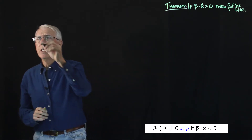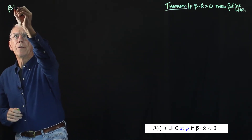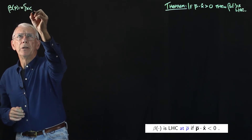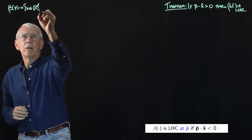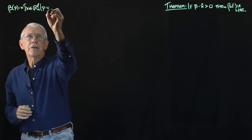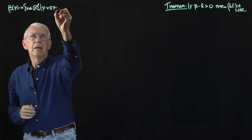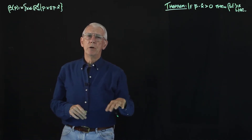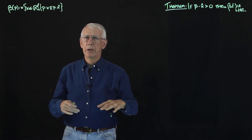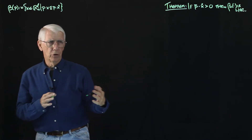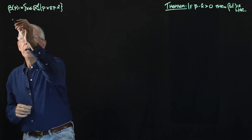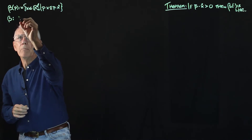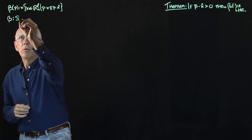Let's remind ourselves what the budget set will be. It's the set of bundles in RL plus that satisfy the budget constraint, where X circle is the consumer's initial bundle — the bundle that the consumer owns of goods initially.